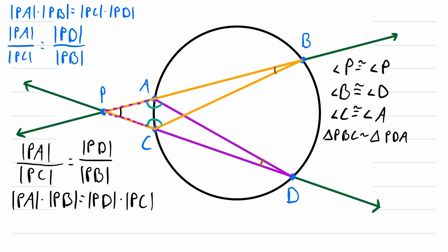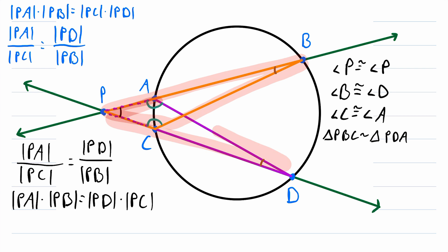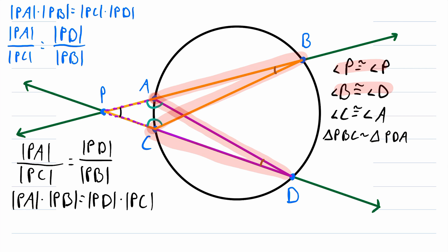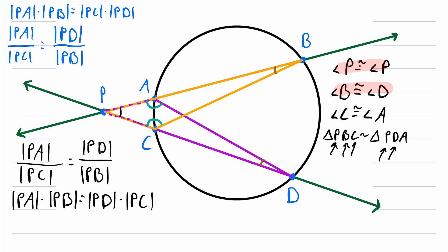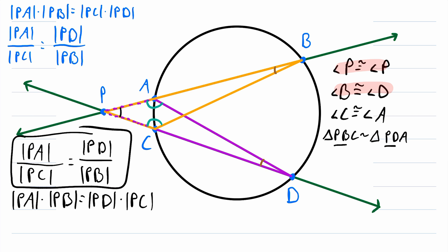So that's how you prove the intersecting secants theorem. We construct two more segments in our diagram so that we can consider two different triangles. By the angle-angle triangle similarity postulate, we quickly conclude that these triangles are similar — they have one shared angle congruent to itself, and each has an inscribed angle that cuts the exact same arc. Then we write the triangle similarity statement, identify corresponding sides, and use the fact that ratios of corresponding sides of similar triangles are equal to get our ratio equality. With a little bit of multiplication, we get the final statement we want.